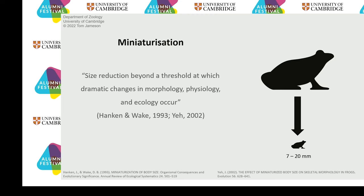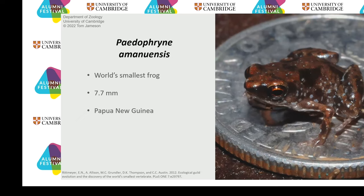Let's look at some examples of tiny frogs from around the world. You can't talk about small frogs without talking about the world's very smallest frog, Paederphorani amauensis. This guy measures in at around 7.7 millimetres long total body length and comes from the highland forests of Papua New Guinea. Not only is this the world's smallest frog, it's in fact the world's smallest tetrapod — the world's smallest limbed vertebrate. Of all the amphibians, reptiles, birds and mammals, this is the very smallest.